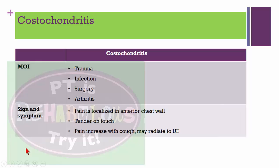Costochondritis may be caused by trauma, infection, surgery, or arthritis. Pain occurs at the costochondral junction and is most common on the left side. The patient has localized pain in the anterior chest wall, tenderness to touch, increased pain with coughing, and pain may irradiate to the upper extremity.